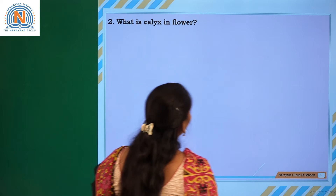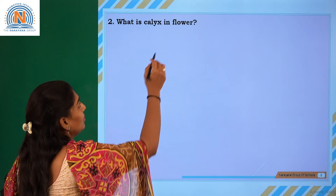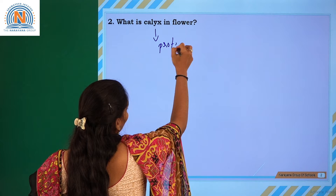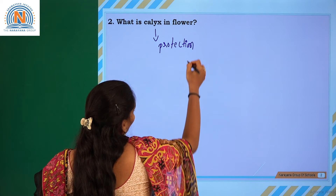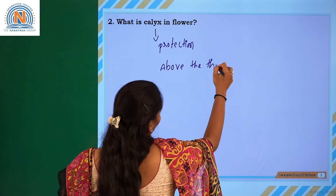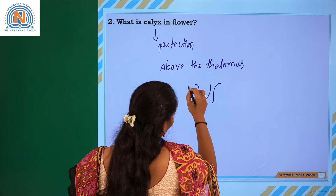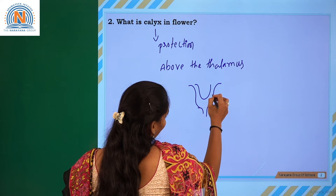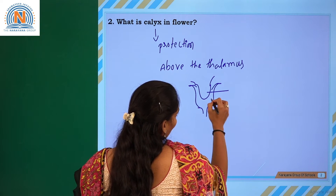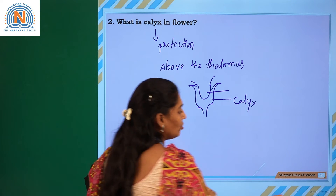The next question is: what is the calyx in the flower? The calyx is very useful for protection purposes. It is situated above the thalamus and protects the flower itself. This region is the thalamus, and this is the calyx.